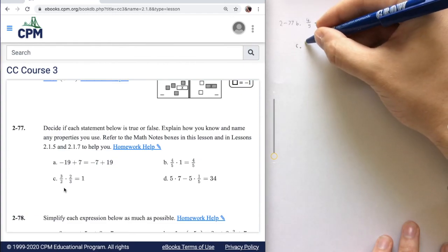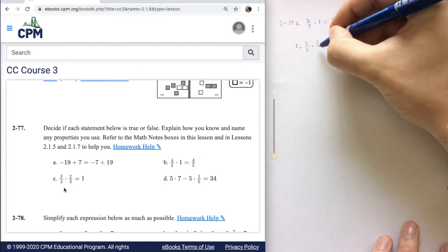That's going to be 3 over 2 multiplied by 2 over 3, if that equals 1.